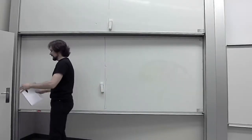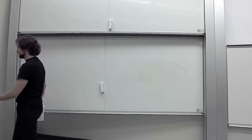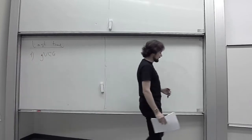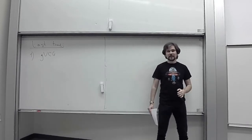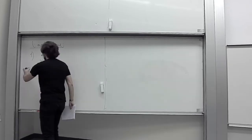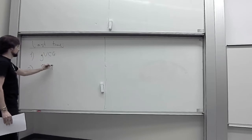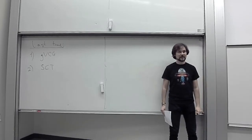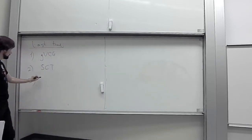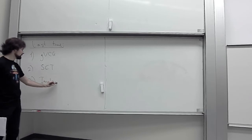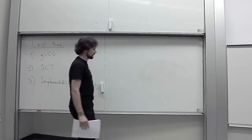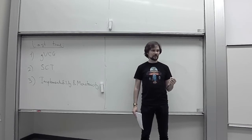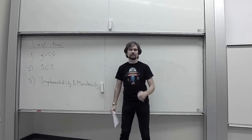Last time, it was quite a varied lecture from many different parts. First, we talked about generalized BCG — specifically a proof that generalized BCG is revenue maximizing among all Bayesian semi-compatible mechanisms. Then we did a speedrun of social choice theory, covering all of it in 40 minutes or less. Finally, we started talking about implementability and monotonicity: how can we quickly test a given social choice function to see whether there exists a mechanism that implements it.